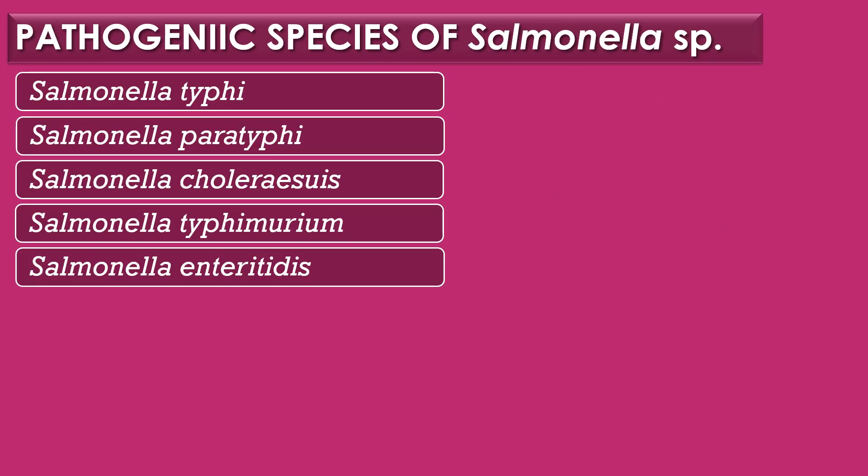In the genus Salmonella, there are five pathogenic species: Salmonella typhi (also called Salmonella enterica), Salmonella paratyphi, Salmonella choleraesuis, Salmonella typhimurium, and Salmonella enteritidis.